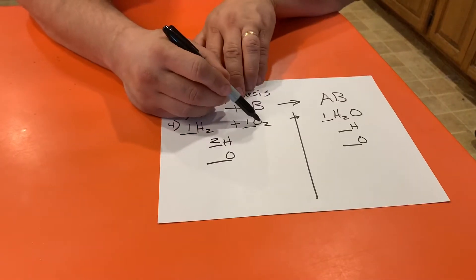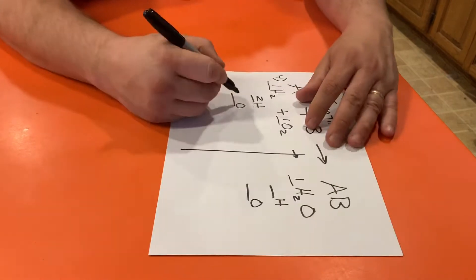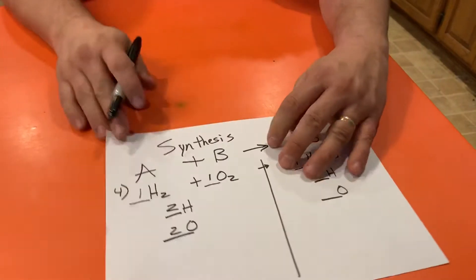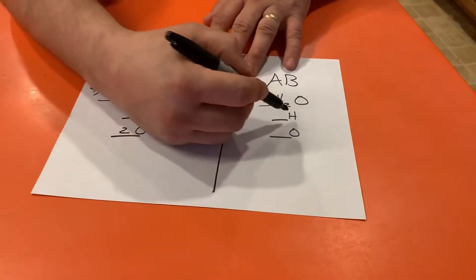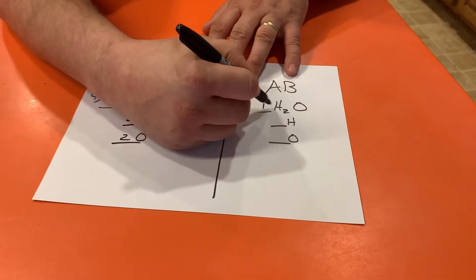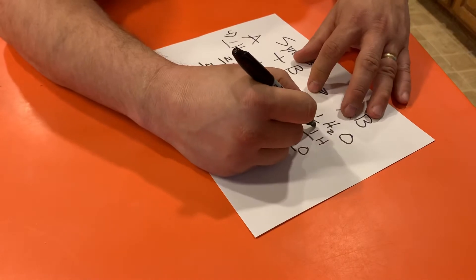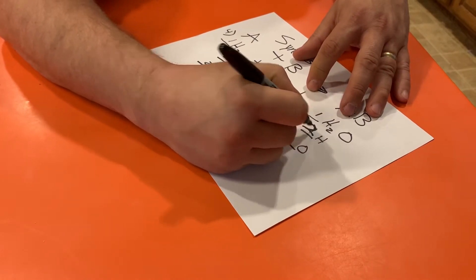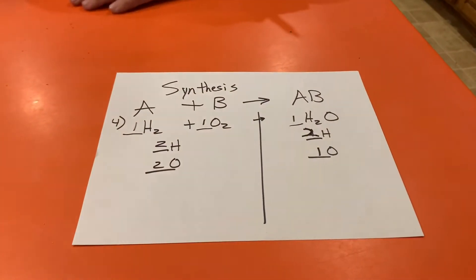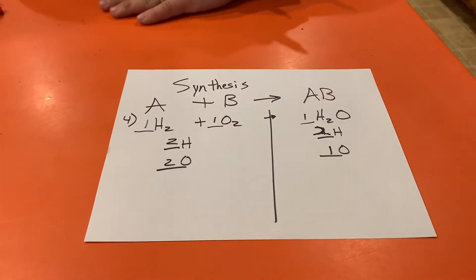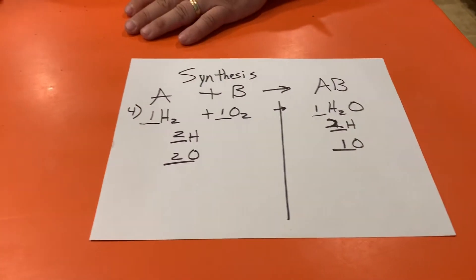Same thing over here, it's O2, so we take a 1 times a 2 and we get 2. So I have 2 hydrogens, 2 oxygens over here. I have one—or sorry, two hydrogens—and one oxygen. That doesn't match up though, does it? See, I've got two oxygens over here, only one oxygen over here.